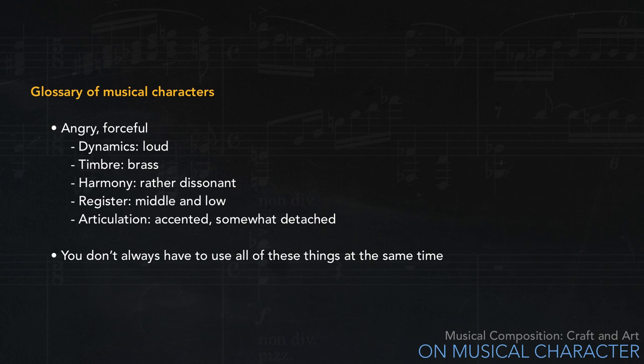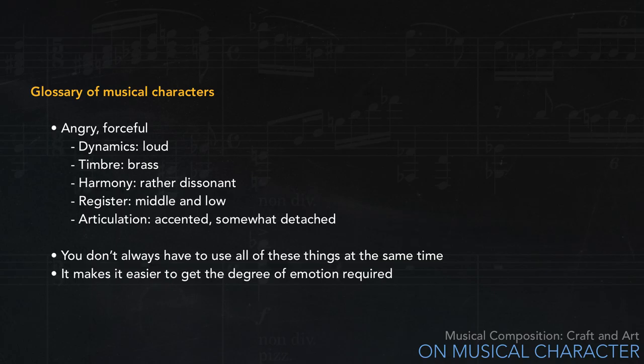Another point about this kind of character glossary is it makes it easier to get the degree of emotion required. For example, if a scene in a film requires something less aggressive, you could simply attenuate some of the aspects of the music. Let's see how this works. Here's a toned-down version of our second example above. This might be useful as, say, a recollection of the original one. The bassoon here is less extreme in register than the tuba, and the string chords are tenuto rather than pizzicato.